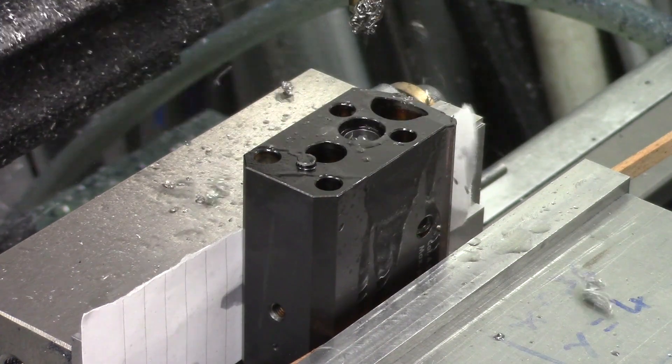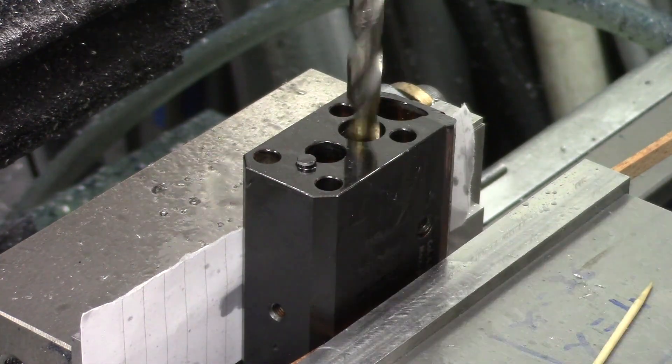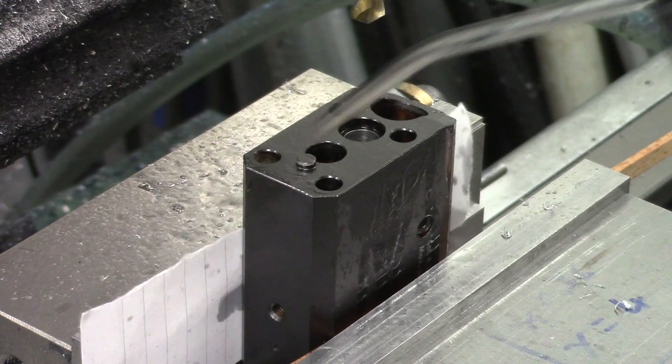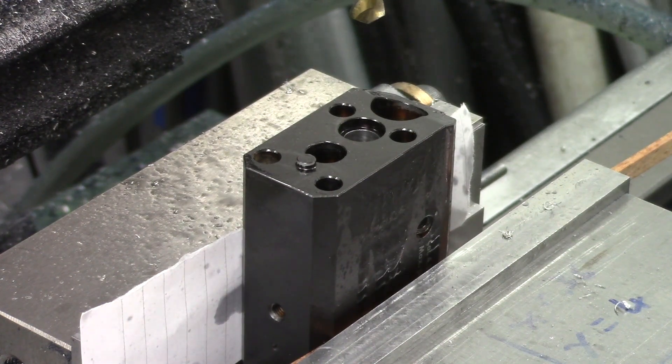But that's all worked out and we're set up in the mill vise, nice and centered on the hole. We're just going through with a couple drill bits and then we'll finish it off with a reamer.